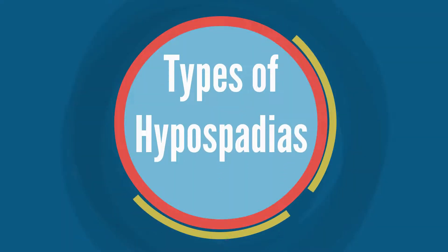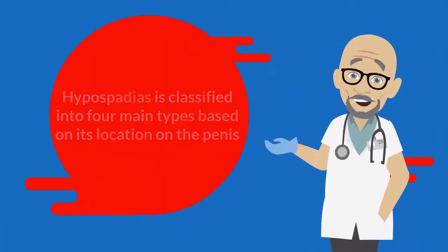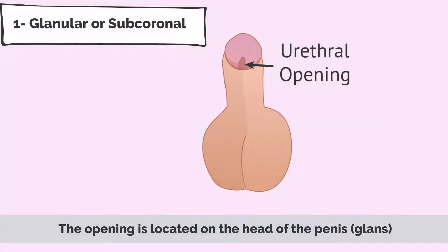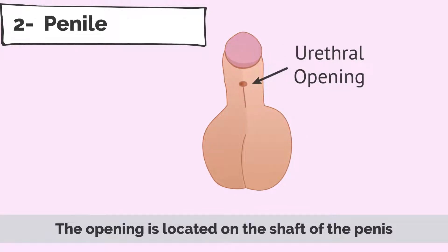Types of hypospadias. Hypospadias is classified into four main types based upon its location on the penis. 1. Granular or subcoronal: the opening is located on the head of the penis, the glans. 2. Penile: the opening is located on the shaft of the penis.